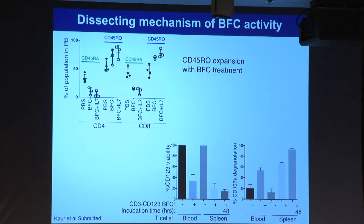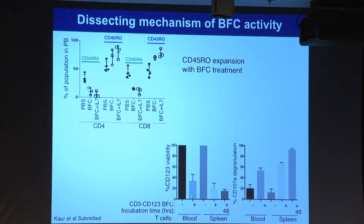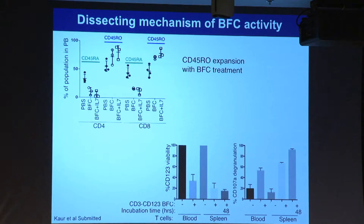To demonstrate that T cells are directly killing tumor cells, we performed an in vitro assay using purified T cells and tumor cells. Without the bispecific conjugate, tumor cell survival is fine. Once you add the bispecific conjugate, survival is much less—showing this is a direct effect of recruiting T cells to kill tumor cells.